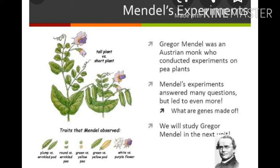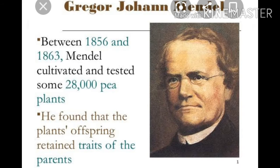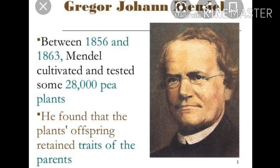Now, talking about Mendel's law of inheritance: the credit for our present understanding of the mechanism of heredity goes to an Austrian monk, Gregor Johann Mendel. He performed a large number of experiments on the pea plant and used his observations to formulate mathematical laws. These laws are called Mendel's laws of inheritance, or Mendelism.